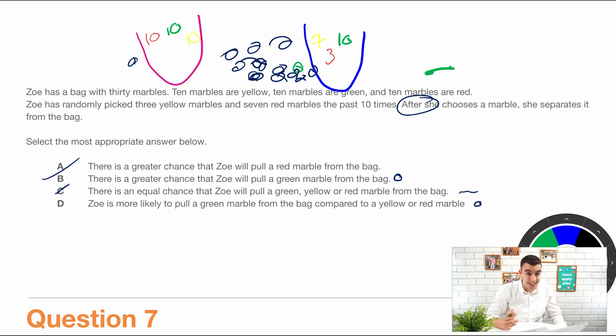You have to read really carefully to get this one right. So is it more likely to pull a green or is there a greater chance that Zoe will pull a green marble? So this is very, very kind of close. This more comes down to your reading comprehension. But in this case, I would pick D just because it is more likely rather than there is a greater chance that Zoe will pull a green marble from the bag.